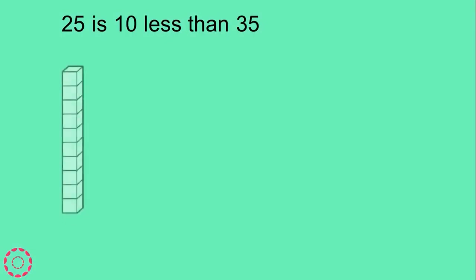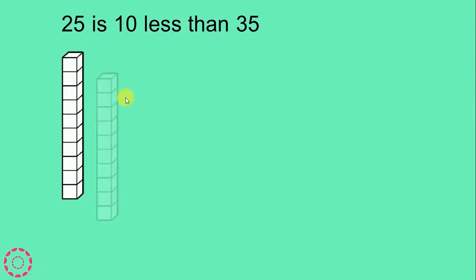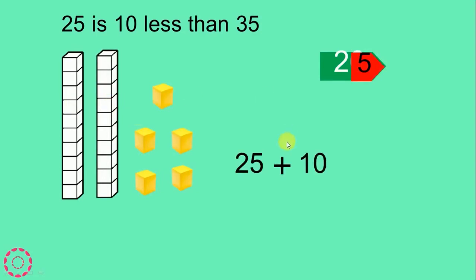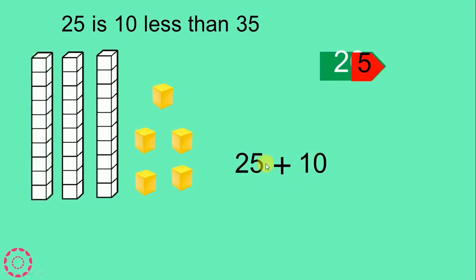25 is 10 less than 35. And 35 is 10 more than 25. Counting: 10, 20, then 1, 2, 3, 4, 5 — we have 25. 25 plus 10: 5 plus 0 equals 5, 2 plus 1 equals 3. We have 35.